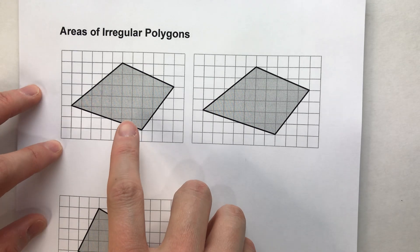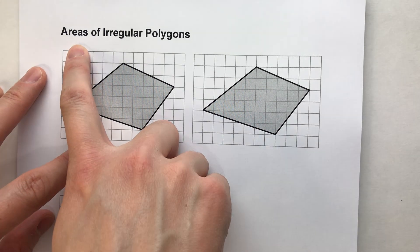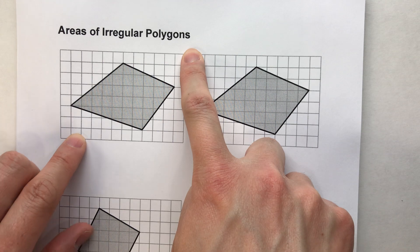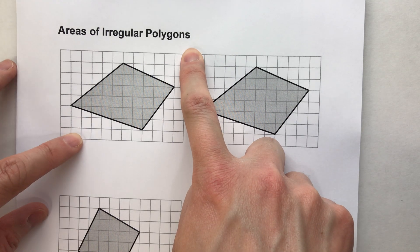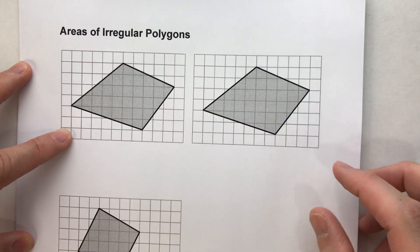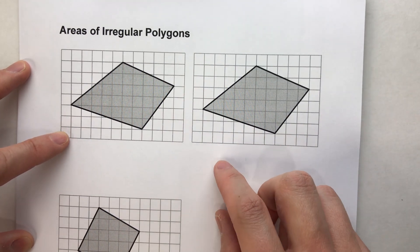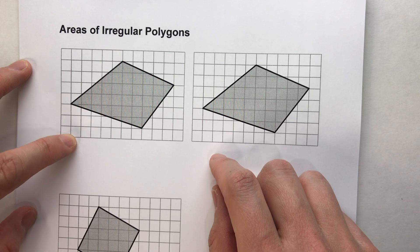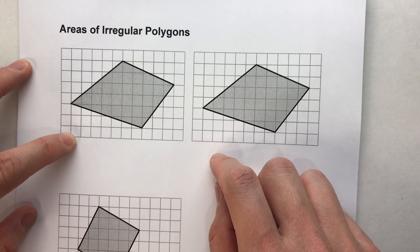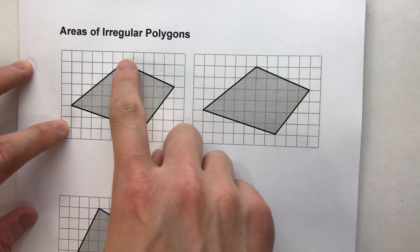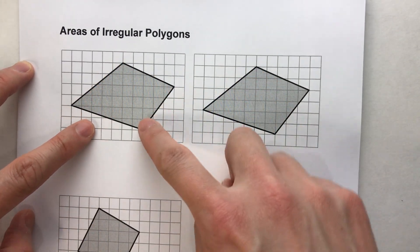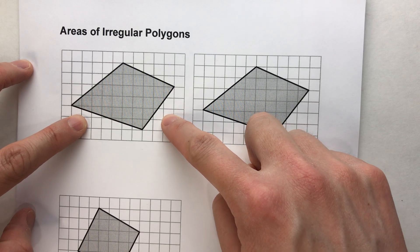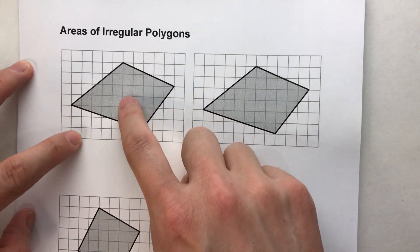Today I'm showing you how to find the area of irregular polygons. There are some basic formulas for areas of basic shapes, but when you have an odd shape like this one right here, there's no formula for this.